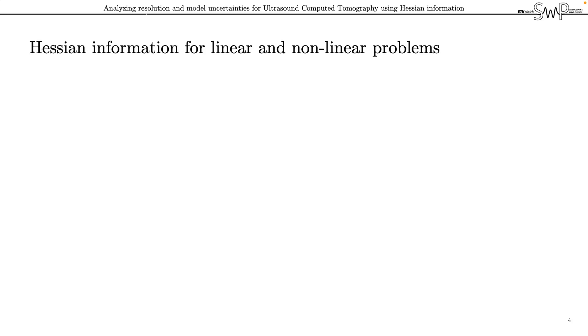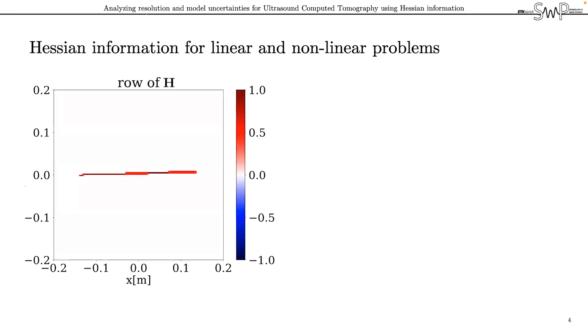We start with the linear straight ray formulation, and here you can see a row of the Hessian mapped to pixel space, visualizing that for transmission data in the infinite frequency approximation, travel times are only sensitive to changes in the model parameters along the geometrical ray path corresponding to the specific measurement.